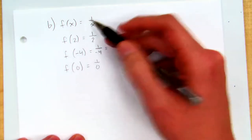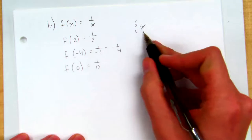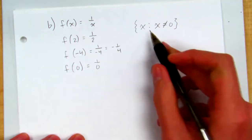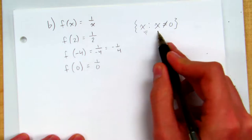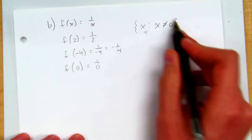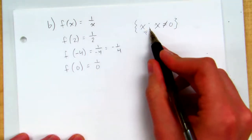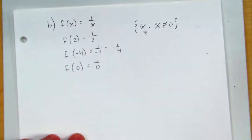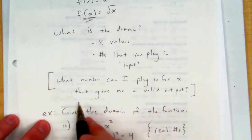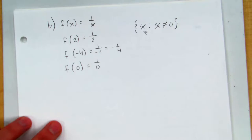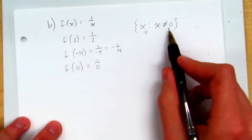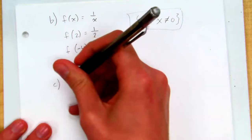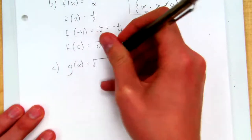So for f of x equals 1 over x, I can plug in any number — positive, negative, fractions, irrational numbers — except for zero. I write my answer using set notation: x such that x does not equal zero. Your domain always starts with 'x colon' and then you write the condition. Here the answer is x does not equal zero.